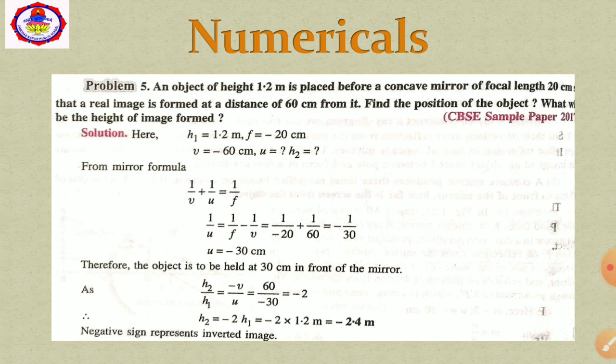Now calculate the height of the image using H2/H1 = −V/U. The result is H2 equals −2 × H1, and since H1 is 1.2 m, H2 equals −2.4 m. The negative sign indicates that the image is inverted, and the image is 2.4 times larger than the object.